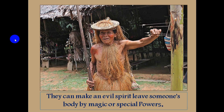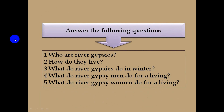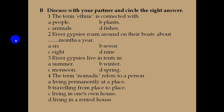Now try to answer these questions with the help of the book. I think you will find out the answers and check them yourself. Now students, open your notebook and circle the right answer. Our first answer is: the term ethnic is connected with people. Second answer: river gypsies roam around on their boats about 8 months. Third: river gypsies live in tents in winter. Fourth: the term nomadic refers to a person who is traveling.